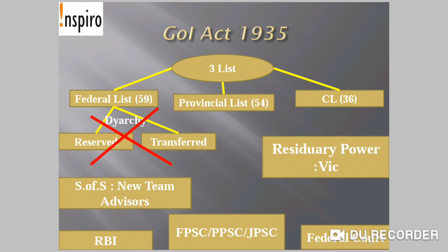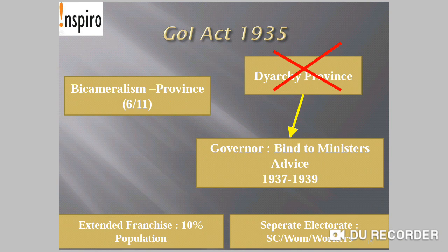Residuary power — whatever subjects were not enumerated under any of the lists — was addressed under the Government of India Act 1935. Under this act, the Reserve Bank of India was established in 1935. A Federal PSC, Provincial PSC, and Joint PSC provision was introduced. A federal court — equivalent to the Supreme Court — was also introduced. Additionally, bicameralism was extended to the provinces: out of 11 provinces, 6 got bicameral legislatures.